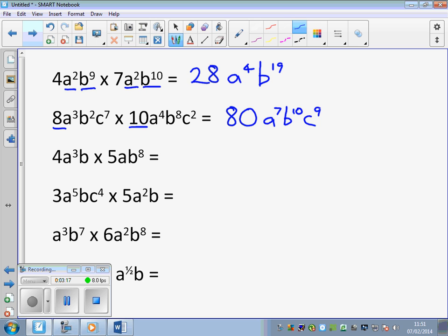The next question has a small problem associated with it. The B has no index. It's actually B to the power of 1. 4 multiplied by 5 is 20. A to the power of 3. And again, this is an A to the power of 1, gives us A to the power of 4. B to the power of 1 times B to the power of 8, B to the power of 9.